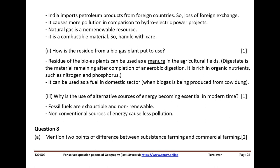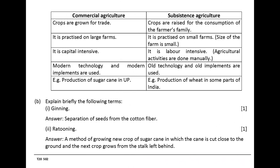Question 8. Mention two points of difference between subsistence farming and commercial farming. Commercial agriculture: crops are grown for trade, practiced on large farms, it is capital intensive, modern technology and implements are used. Example: production of sugarcane in Uttar Pradesh. Subsistence agriculture: crops are raised for the consumption of the farmer's family, practiced on small farms, it is labor intensive, old technology and implements are used. Example: production of wheat in some parts of India.